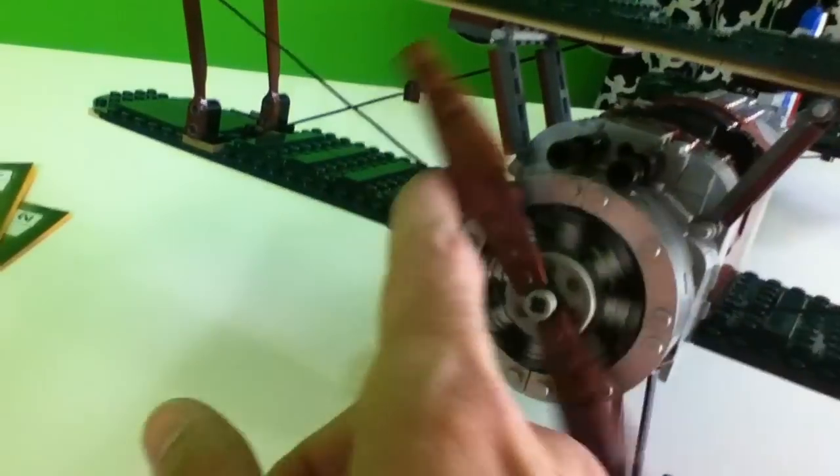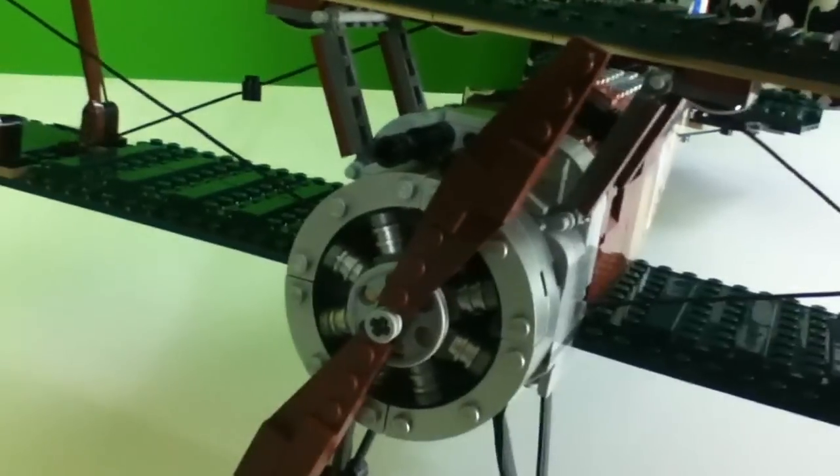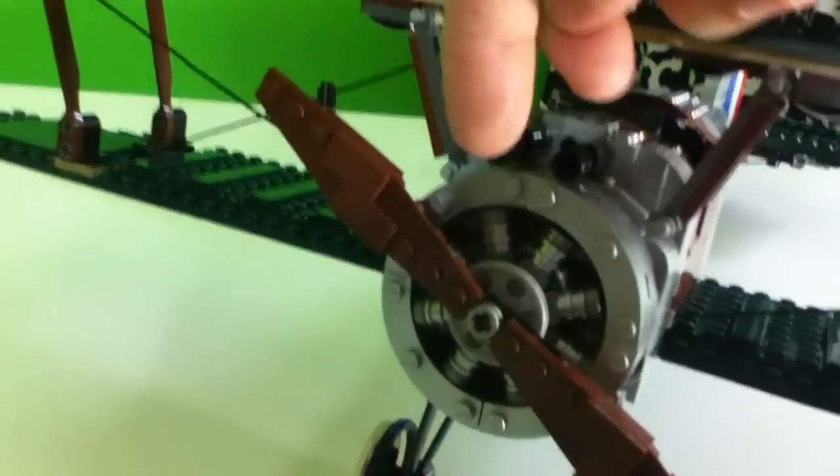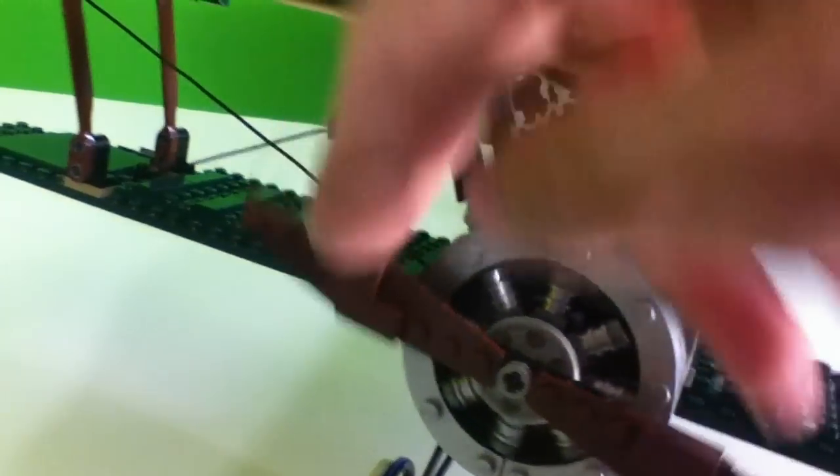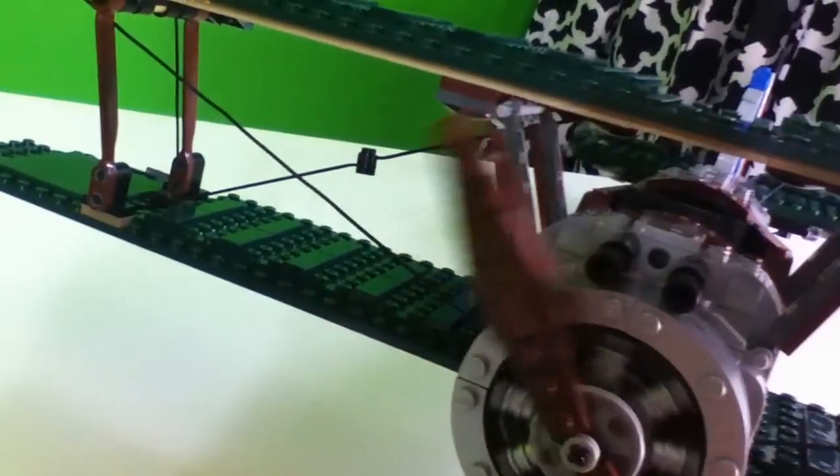I reviewed the Sopwith Camel here. We have the propeller here and we know the pilot will sit back here, and then here's the machine gun. And as you notice, the machine gun is right behind the propeller.